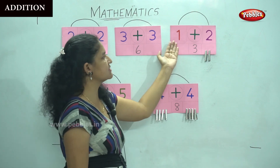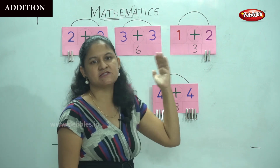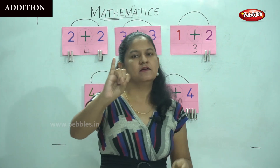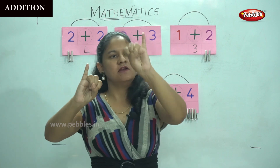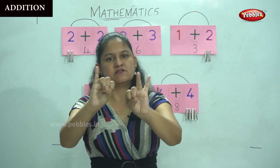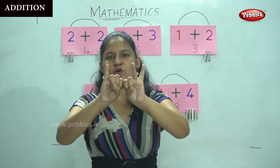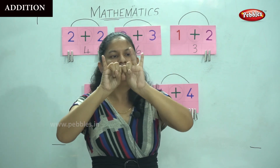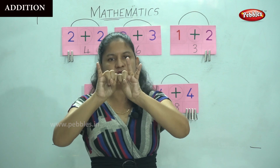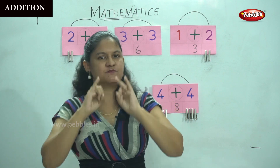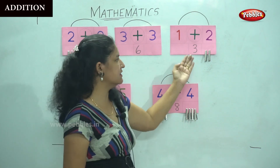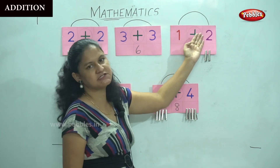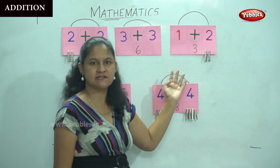The next is one plus two. So one finger and one, two more. When I add up all the fingers that are up — one, two, three — it gives me the answer three. So one plus two is three.